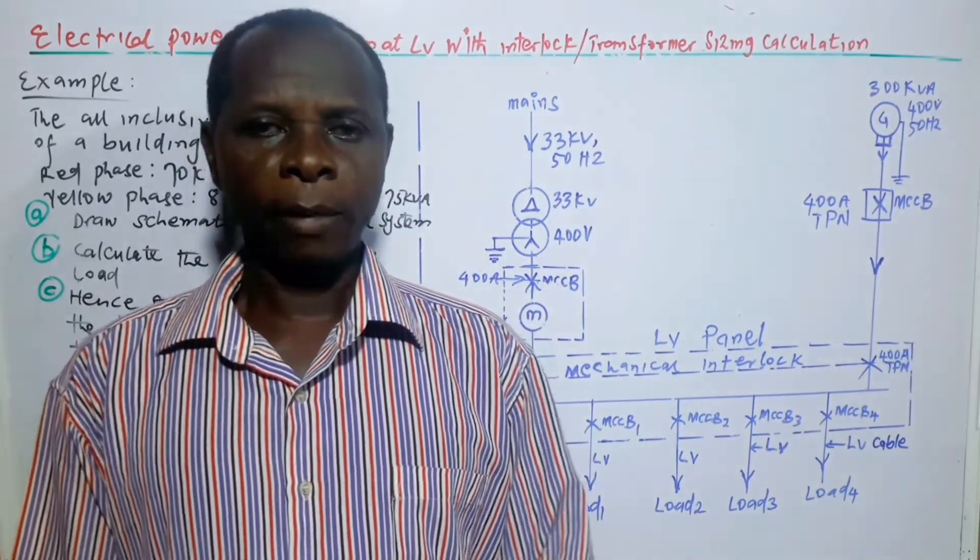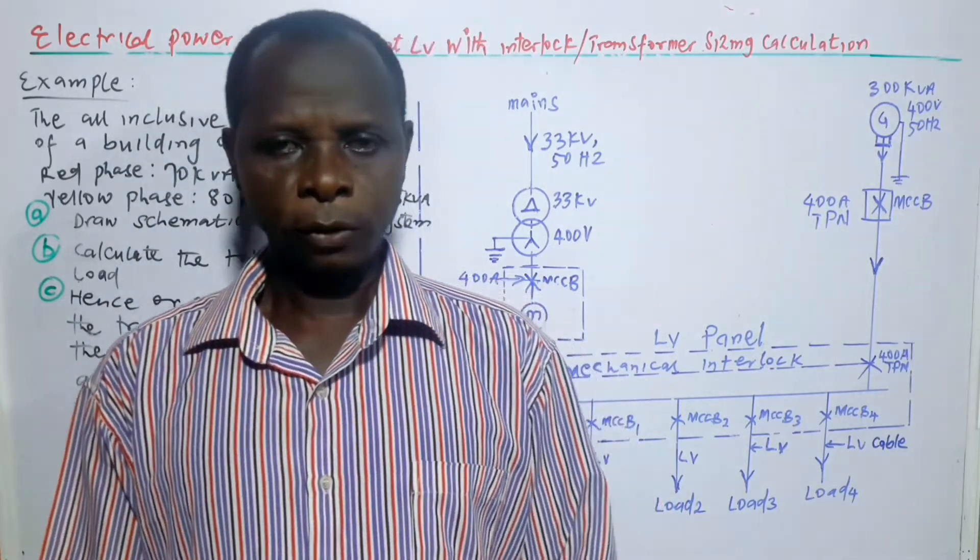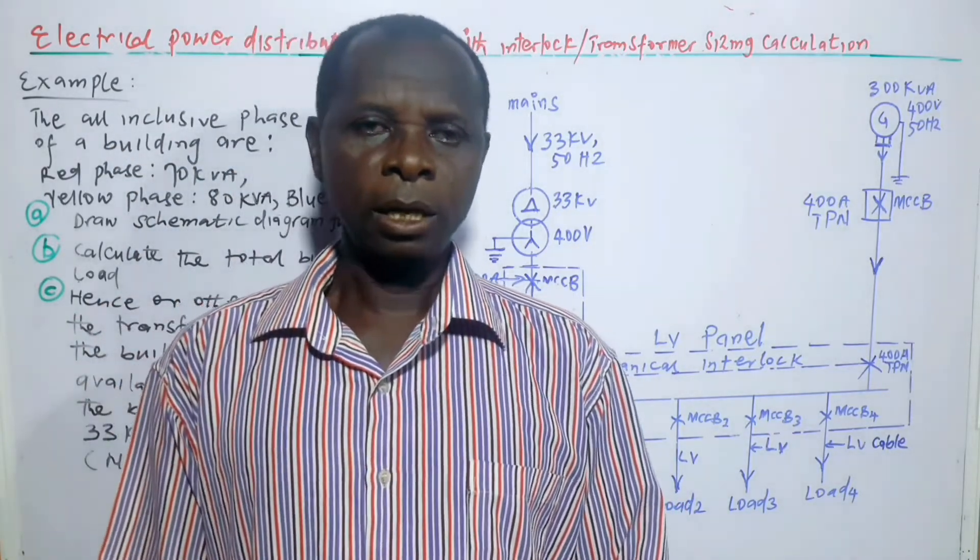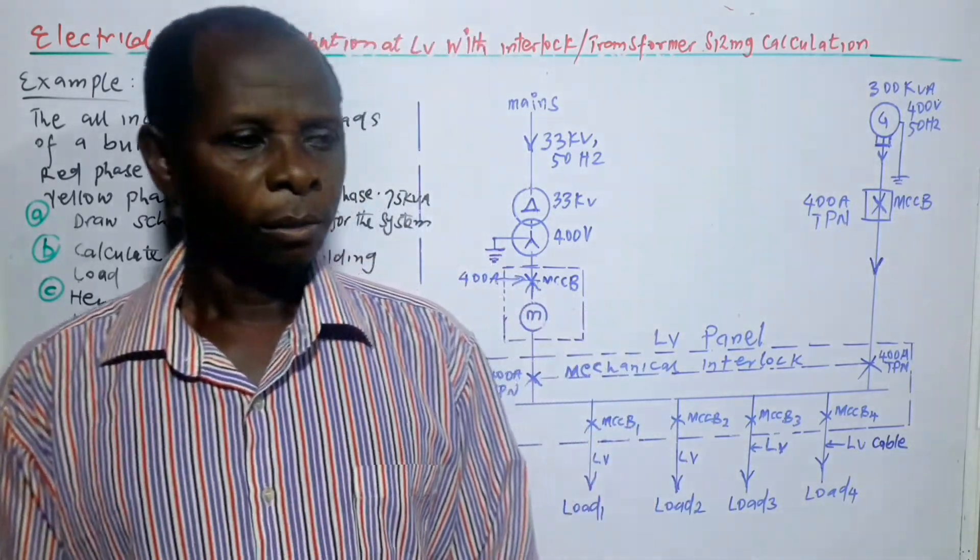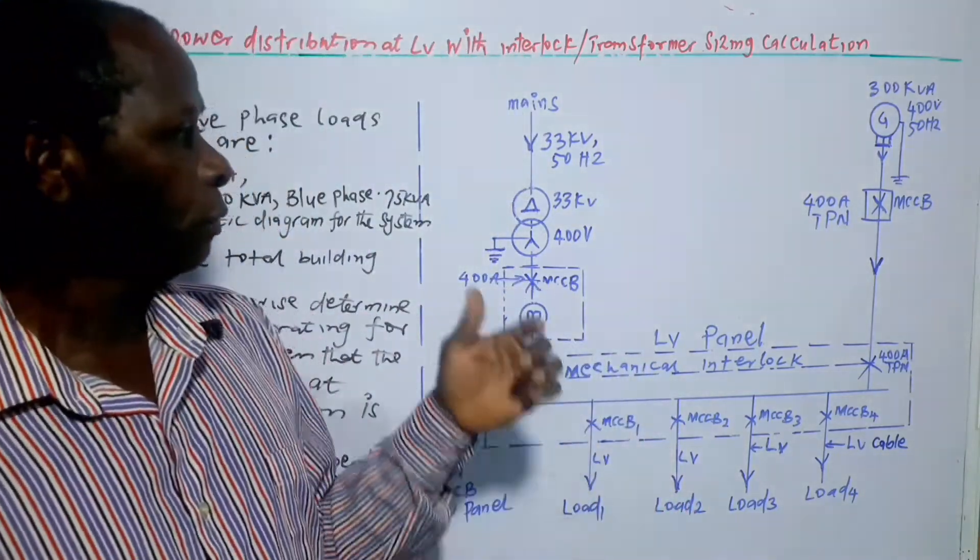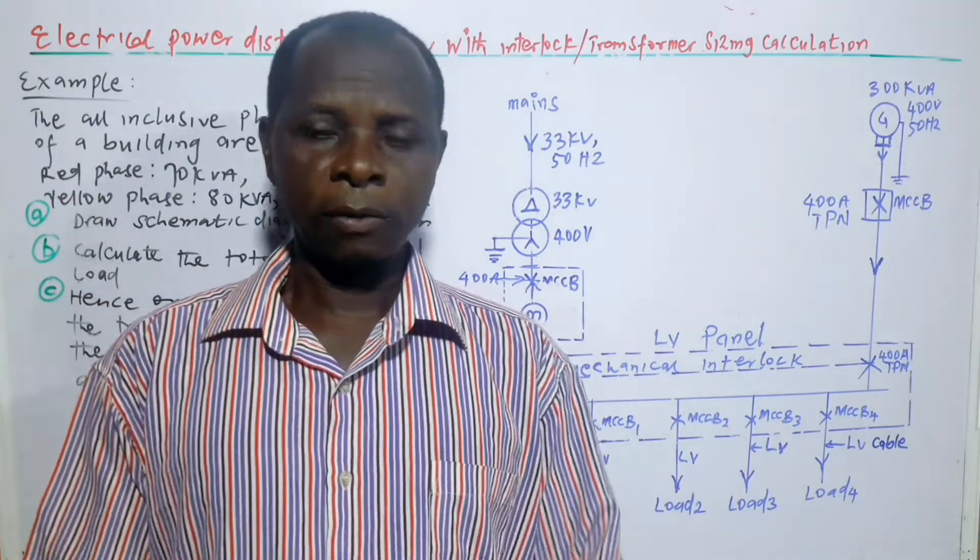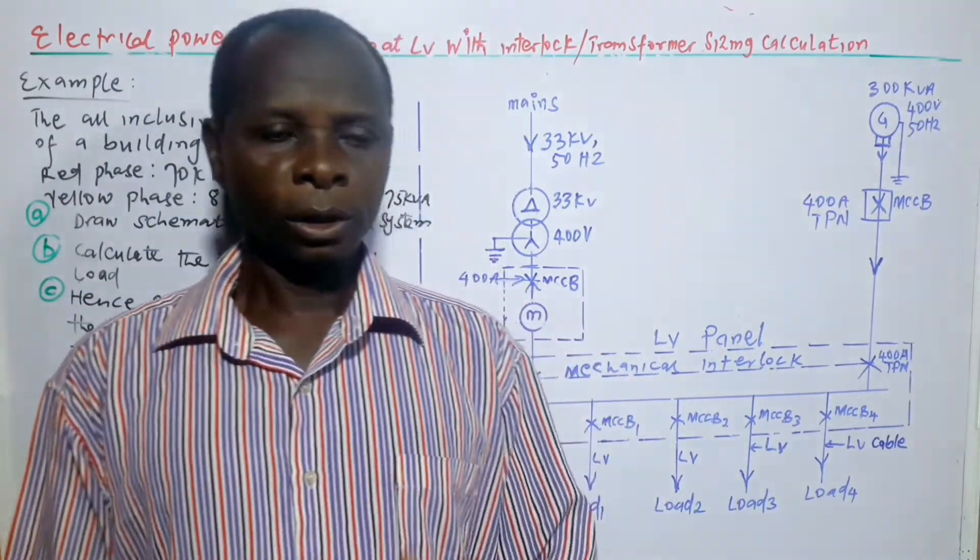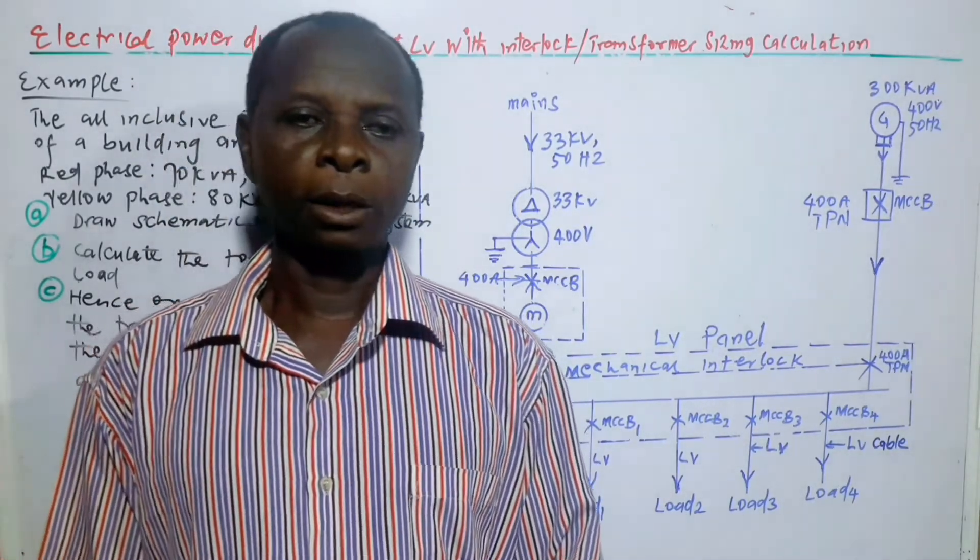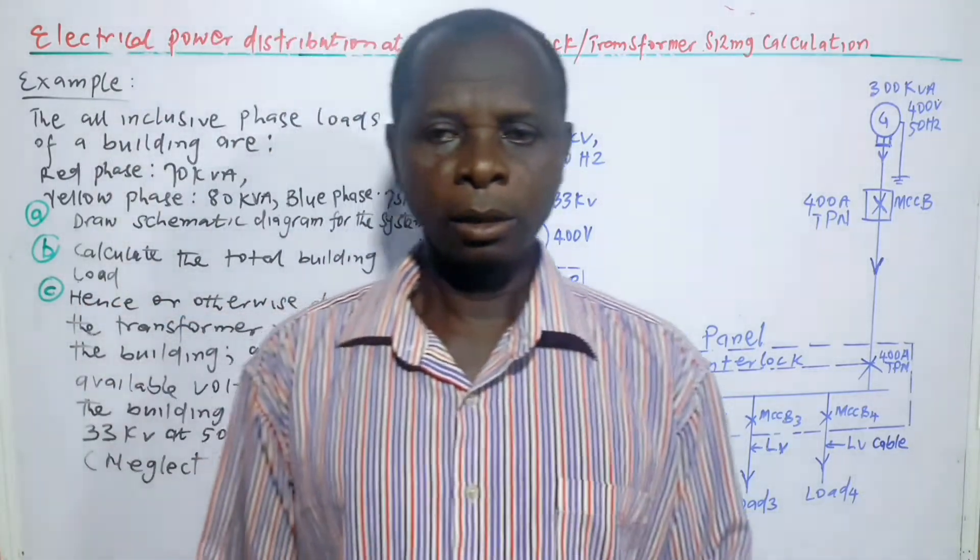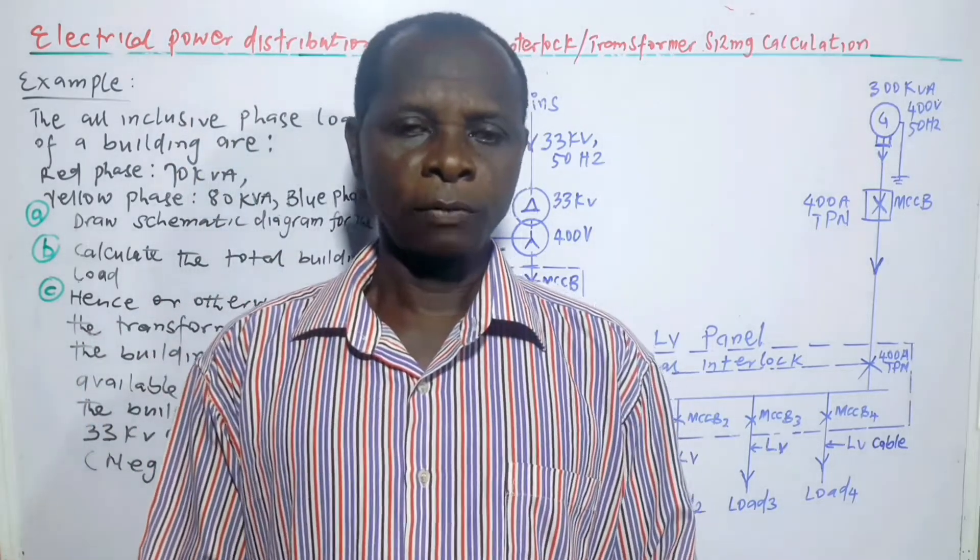In some of my previous videos, power distributions were done at medium voltages, mainly 11 kV or 33 kV. But in this situation, even the supply transformer which has 33 kV, the 33 kV is stepped down to 400 volts for the purpose of distribution at low voltage, as indicated by the topic of this video.